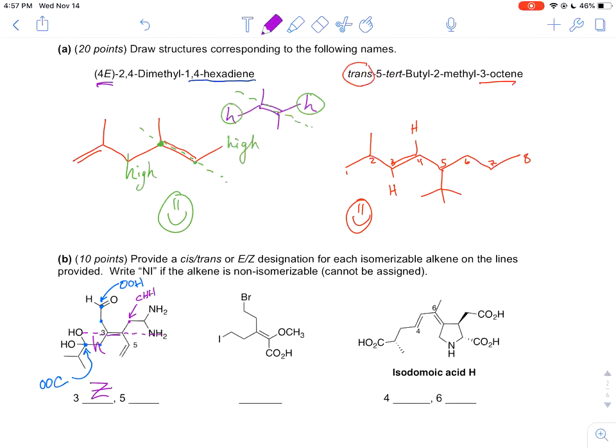Next one, we look at carbon-5, the double bond there, and we see that it is non-isomerizable, meaning you're not going to be able to define a cis-trans because one side has two of the same group. So this is an NI for non-isomerizable. There are no isomers for that alkene is what non-isomerizable means.